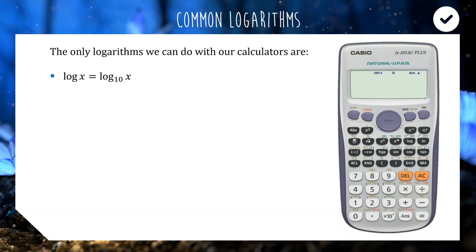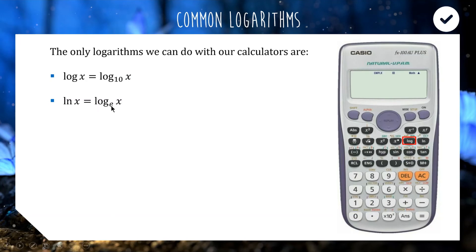The inconvenient thing about logarithms is that there are lots of different types — log base 2, log base 5, log base 9, and so on. However, our Casio calculators only do two types. The first is log base 10 — on your calculator you'll see a button that just says 'log', which actually means log base 10. The one next to it is LN — not IN, but LN — which stands for logarithm natural, or the natural logarithm. The natural logarithm refers to logarithm with base E, that magic number 2.718. When you press the LN key, your calculator is doing logarithm base E of that number.